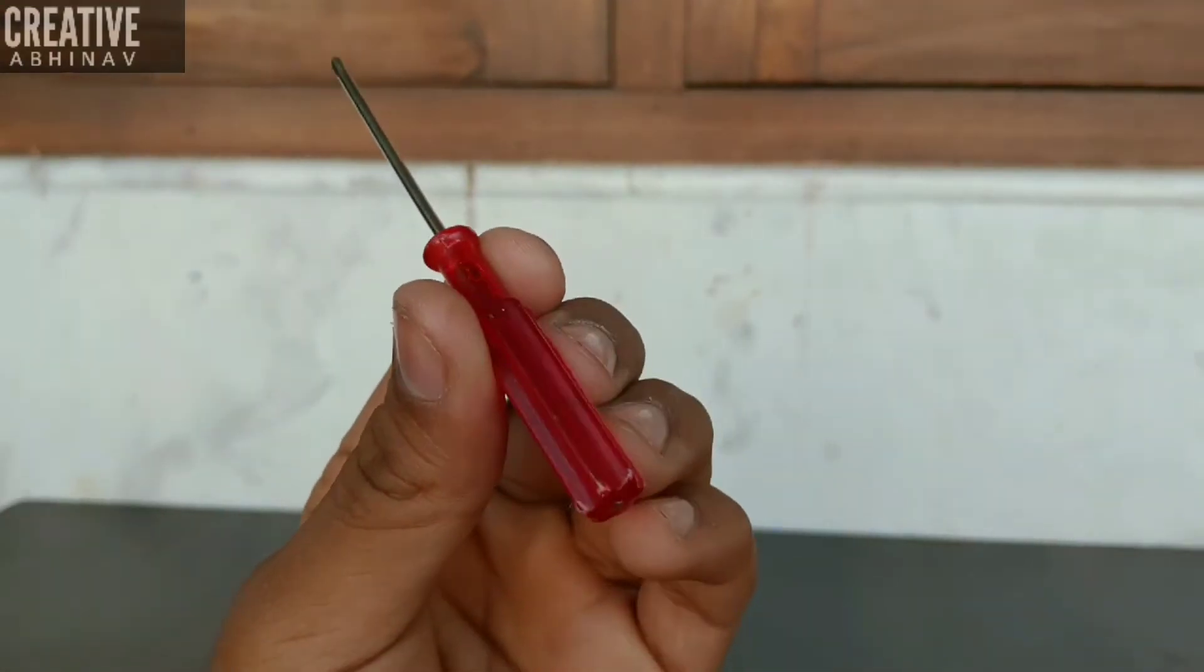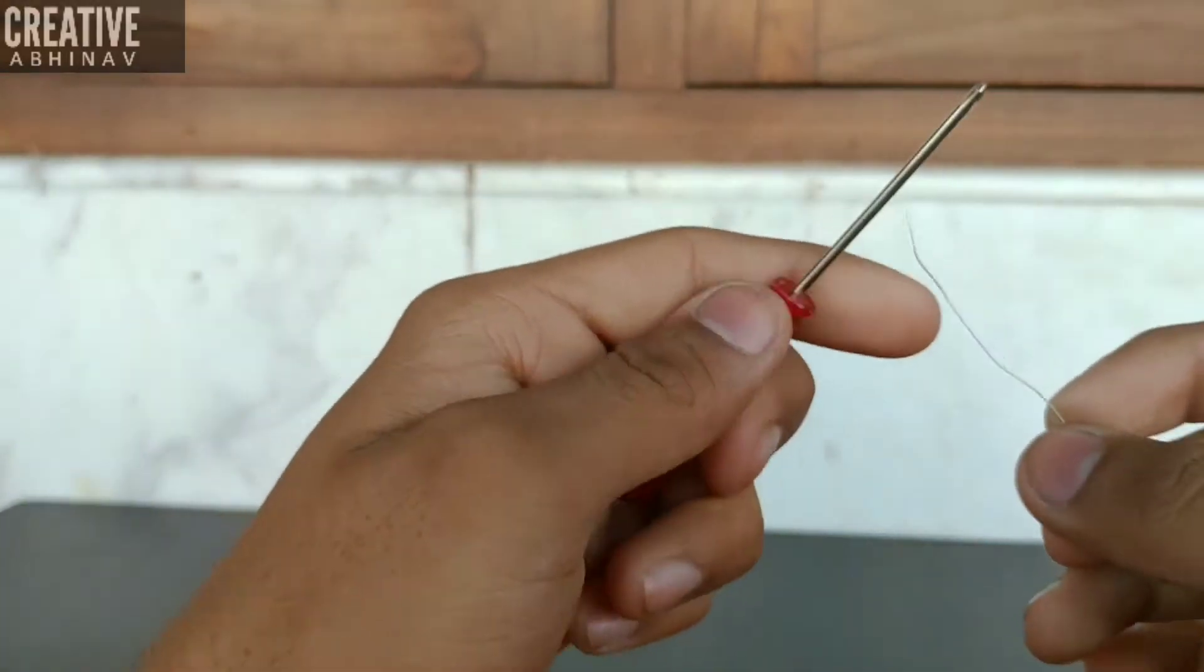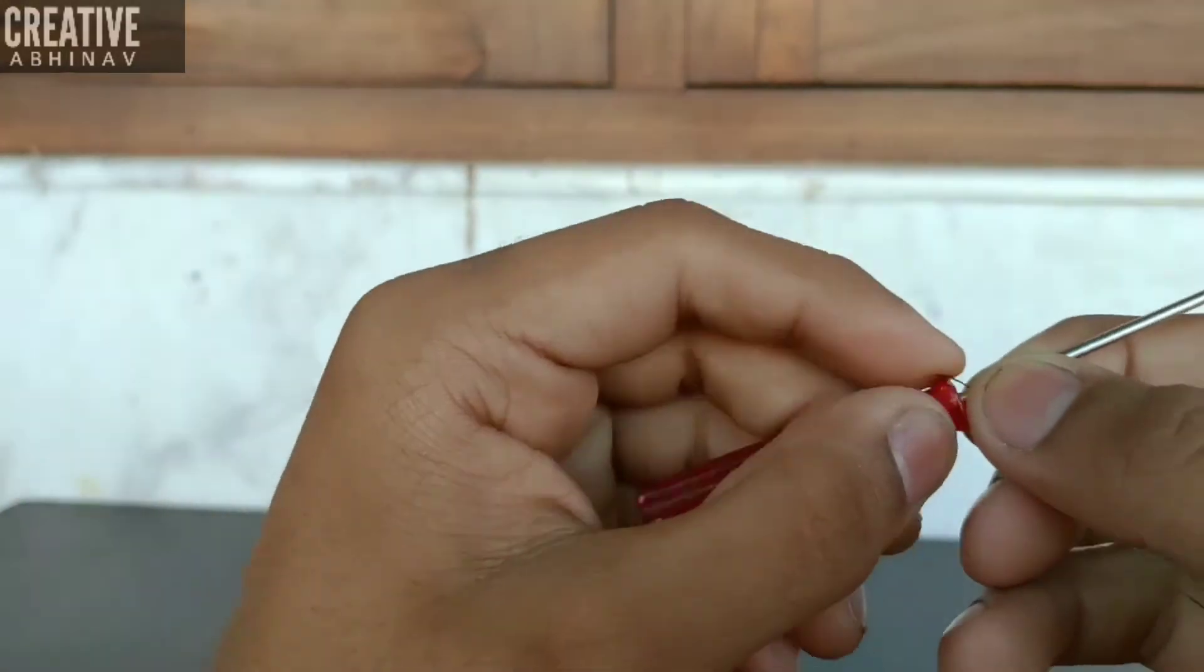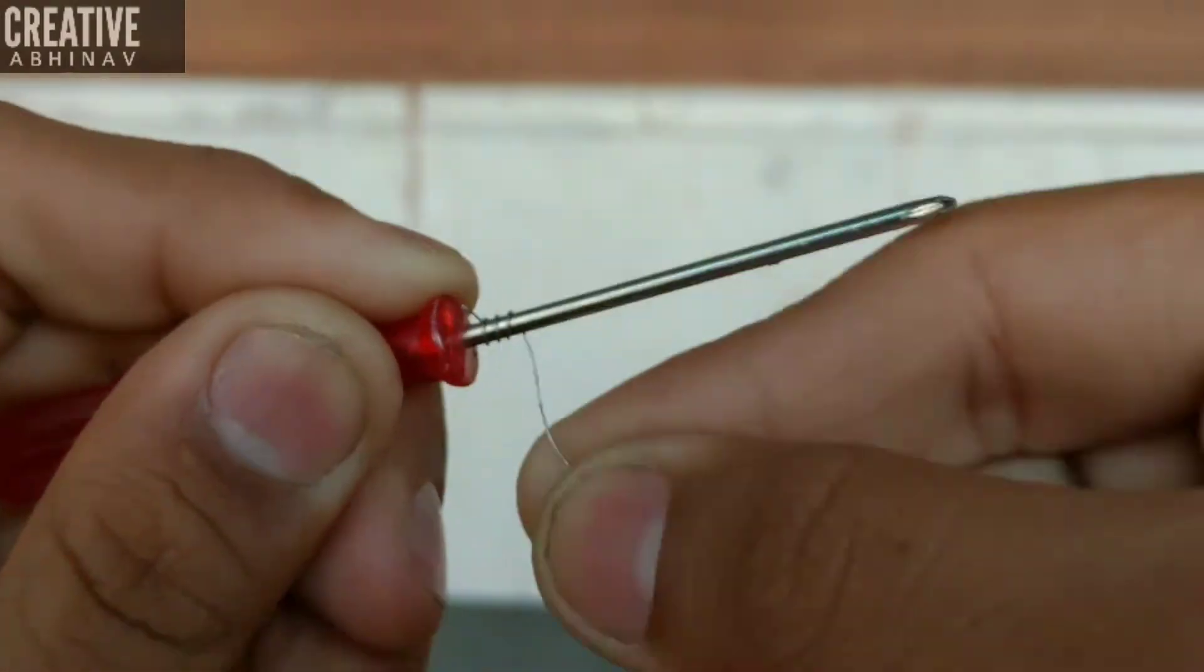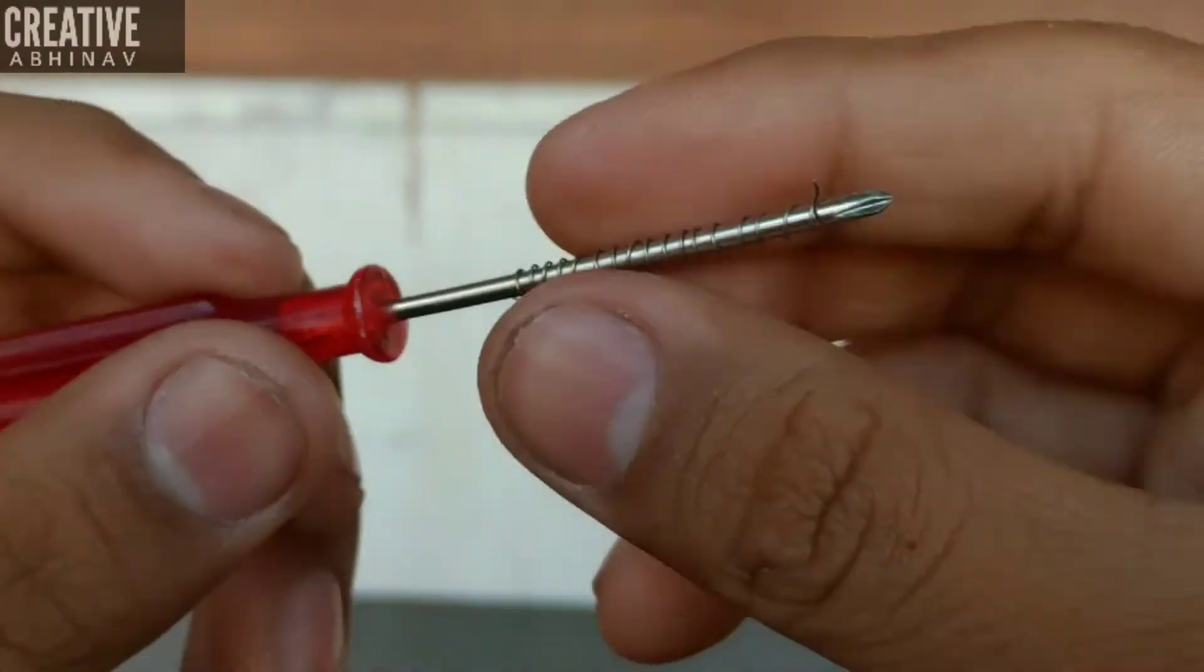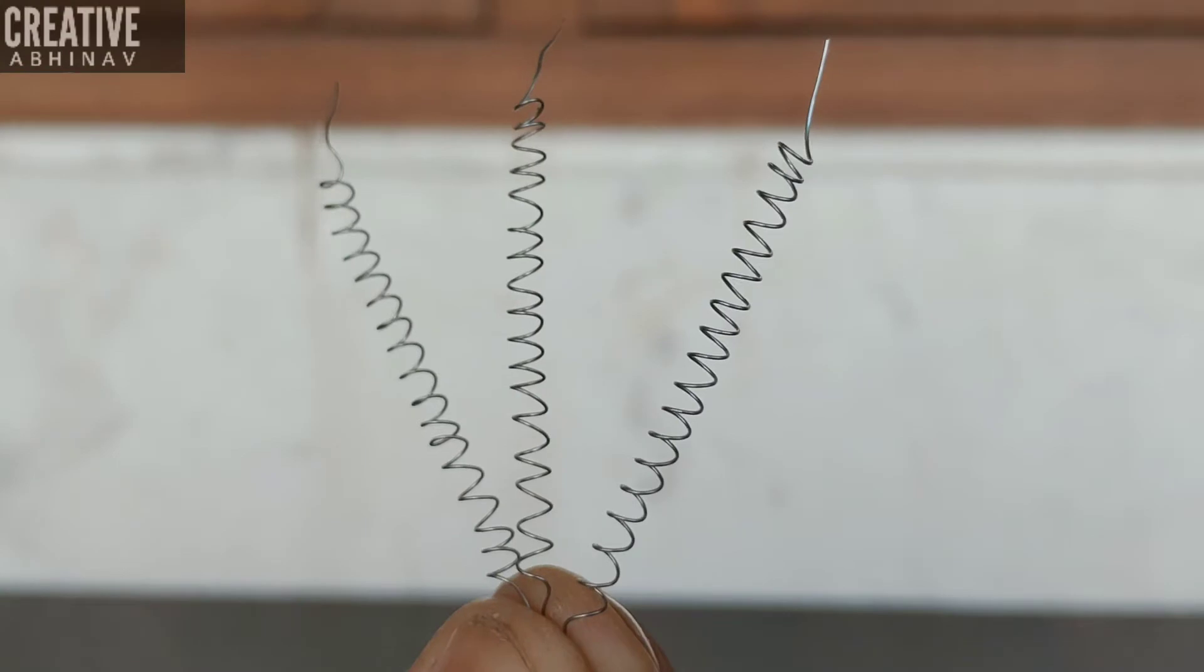Then take a small screwdriver and a nichrome wire, then what we have to do is make a coil of it. Then we have to do the same process with other two nichrome wires like this.